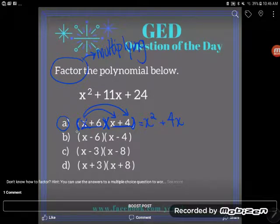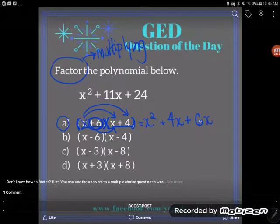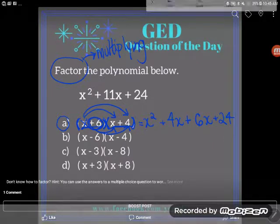Okay, now I finished passing out my first term. Now it's time to pass out my second term, the positive 6. So let's try positive 6 times x. That would be positive 6x. And positive 6 times positive 4 would be positive 24. And this is looking really good so far.